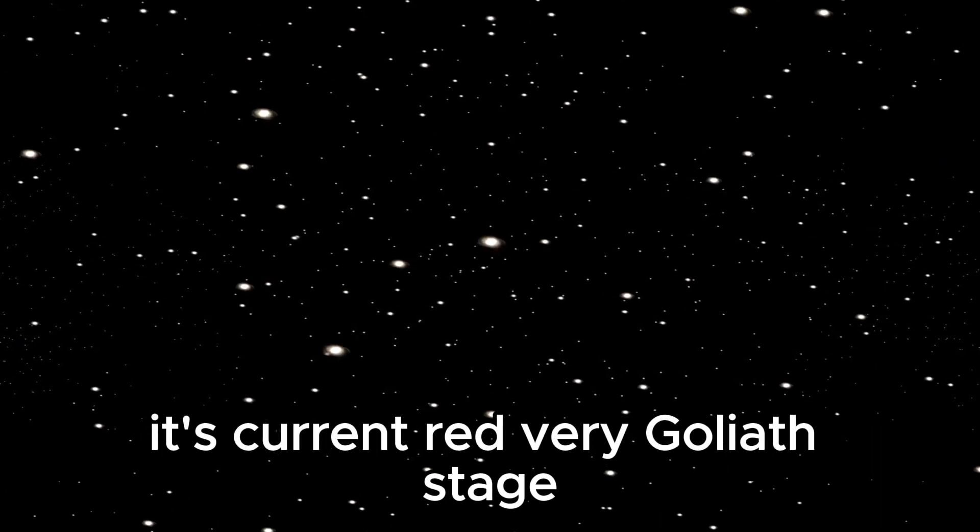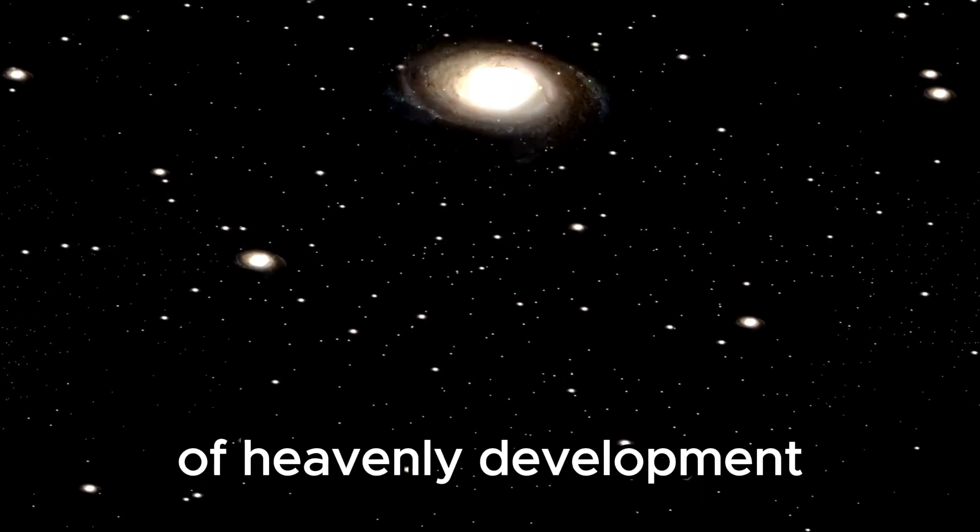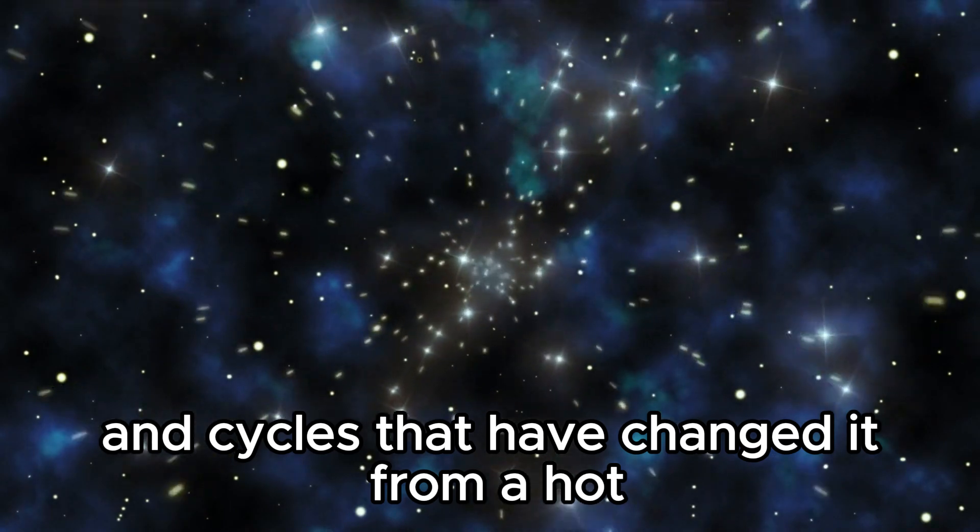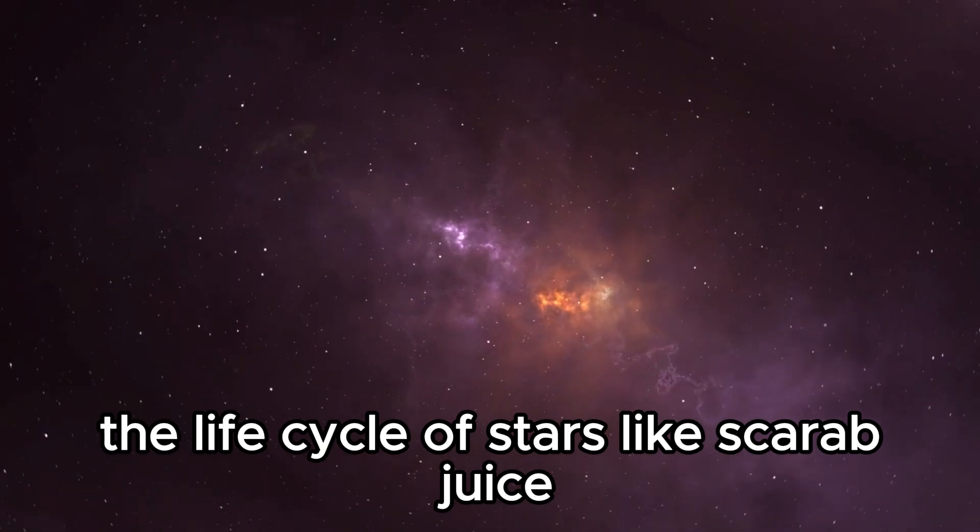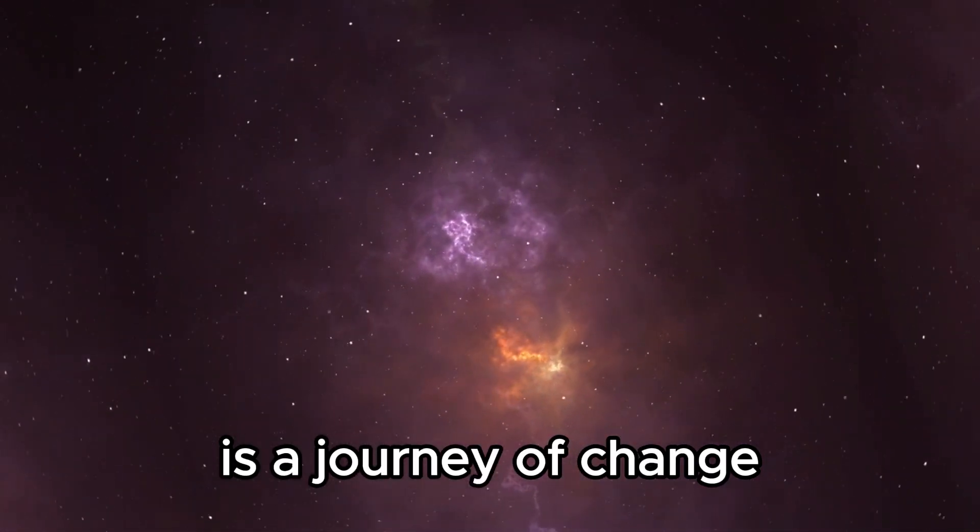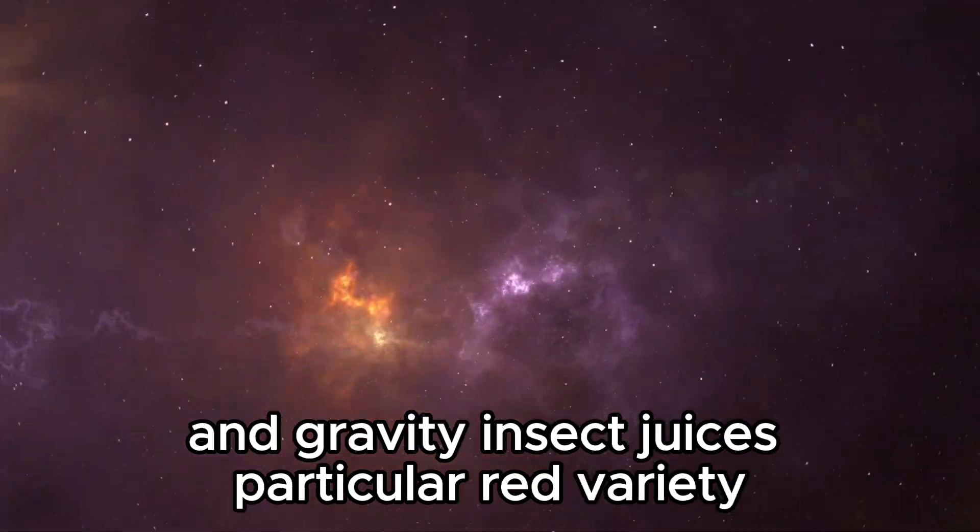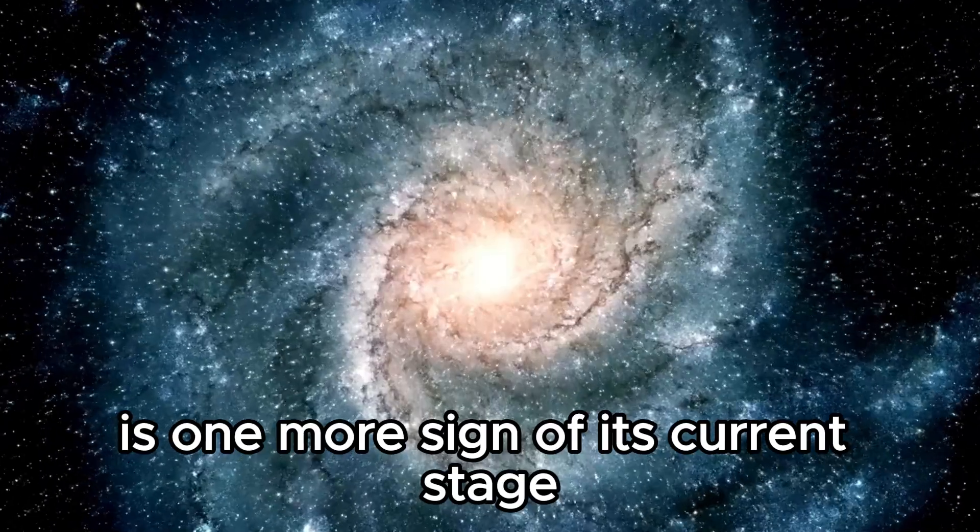Its current red super giant stage represents the culmination of millions of years of stellar evolution, a period marked by dramatic changes in processes that have transformed it from a hot blue star into the red giant we see today. The life cycle of stars like Betelgeuse is a journey of transformation driven by the relentless forces of atomic fusion and gravity. Betelgeuse's distinctive red color is another sign of its current stage, a consequence of its relatively cooler surface temperature compared with stars like our sun.